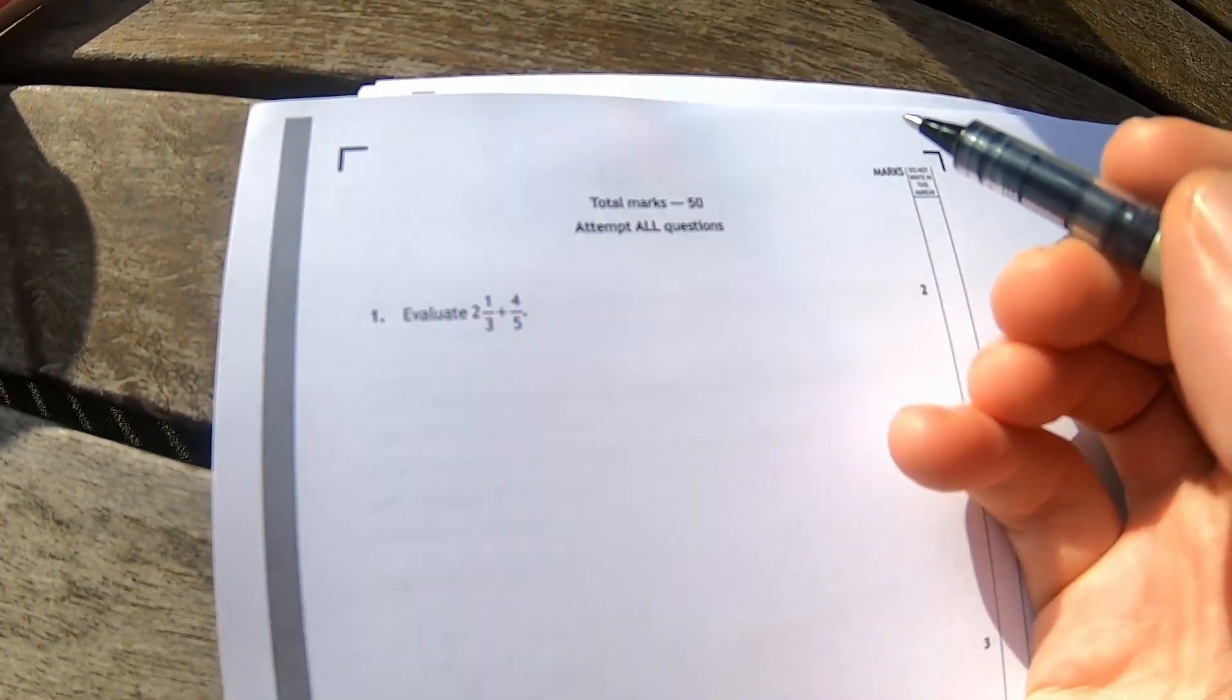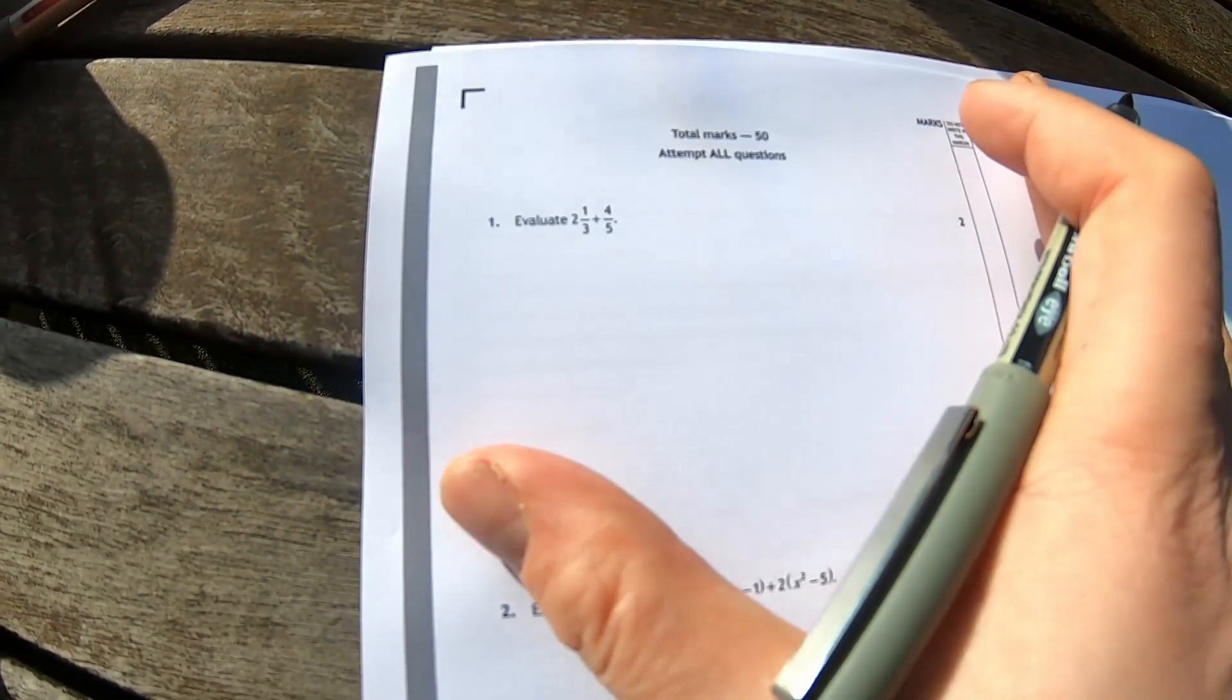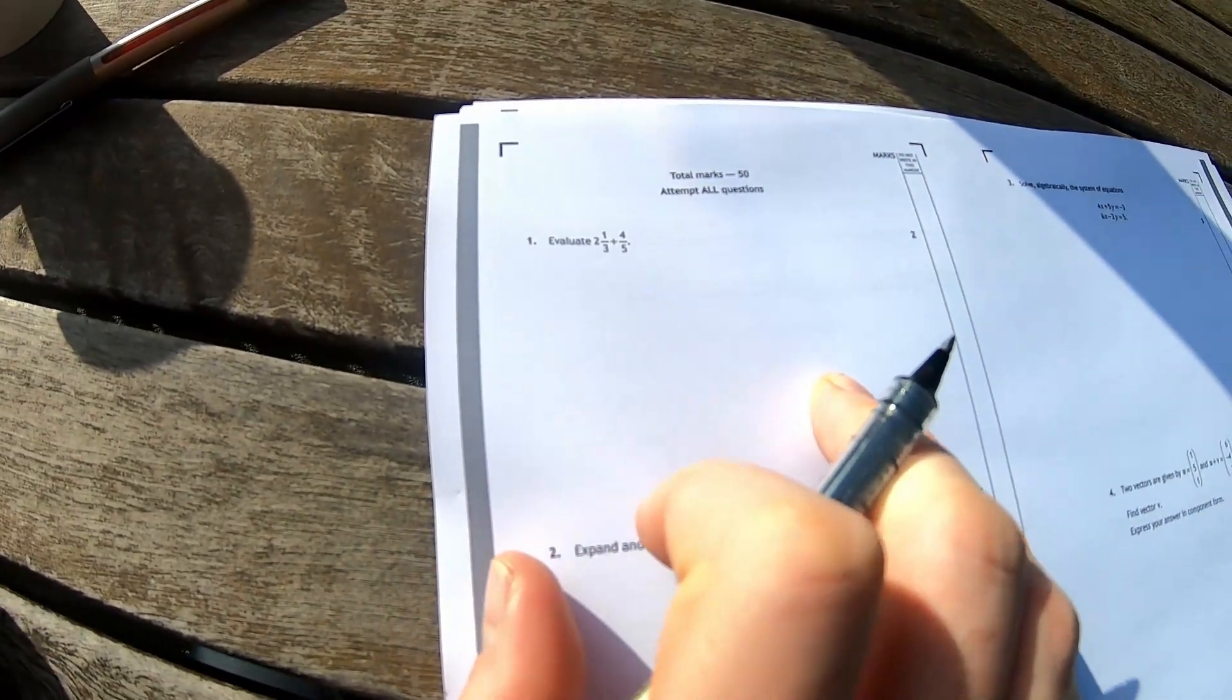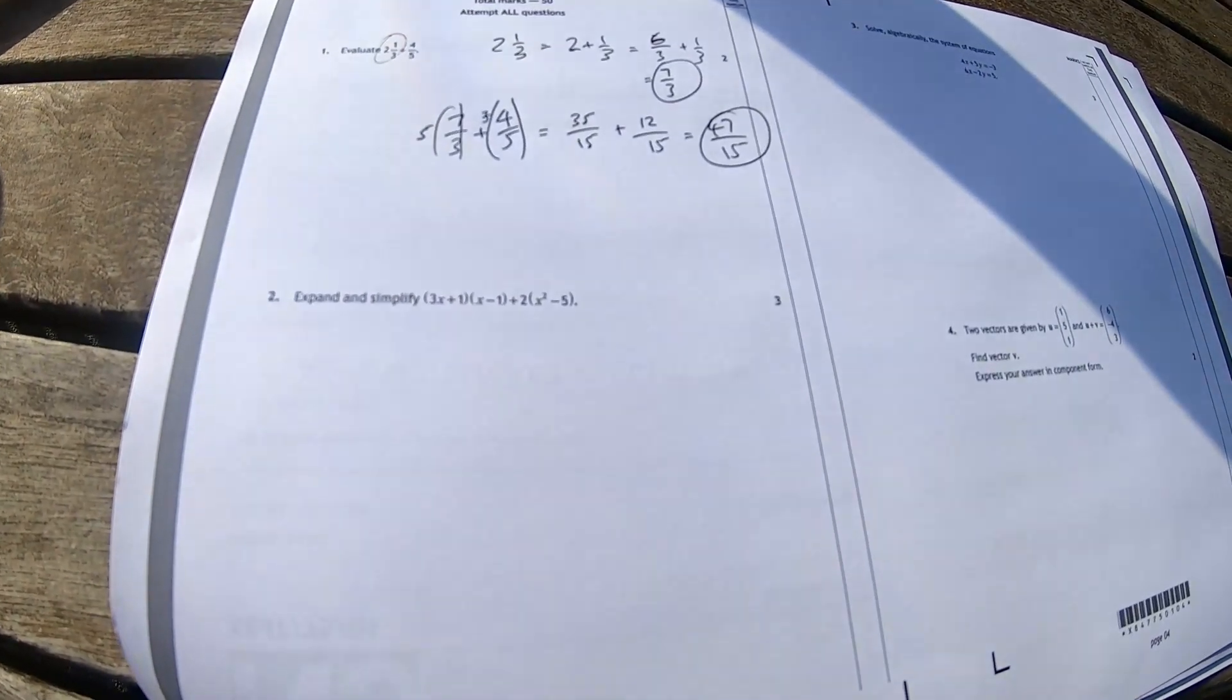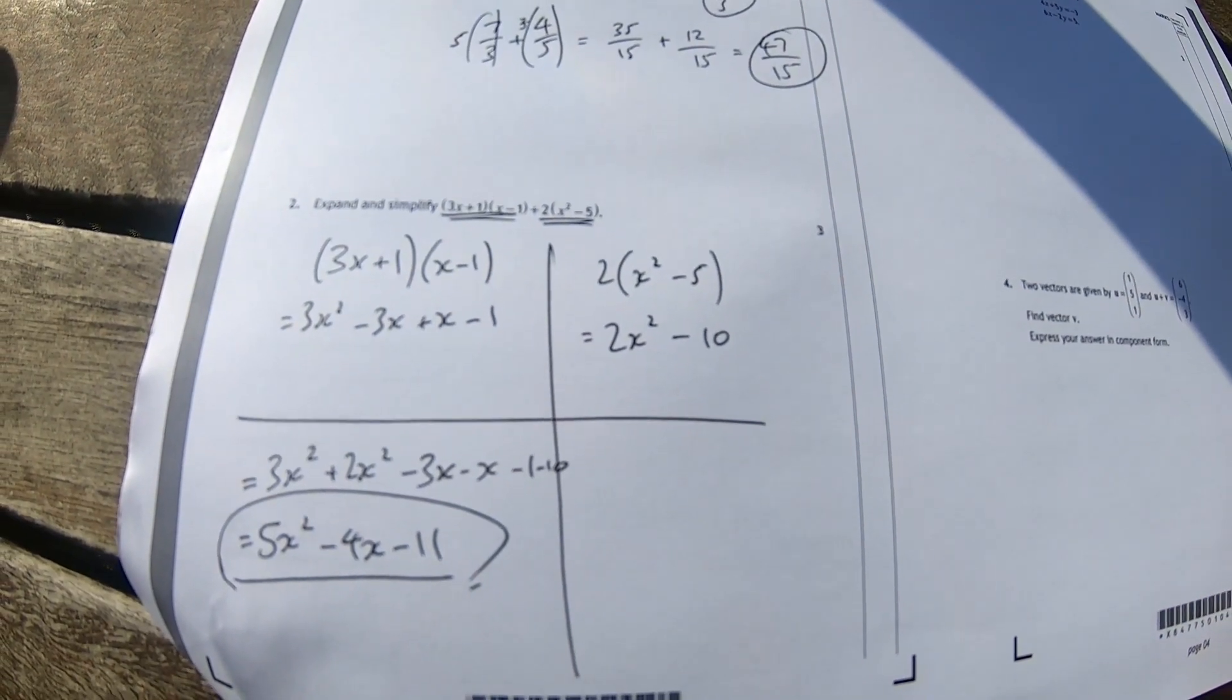Evaluate two and a third plus four fifths. First question is a really easy warm-up I hope. Let's do the second one. Expand and simplify this to the brackets. Here we go. There we go. Really no major issues so far. Let's try the next one.